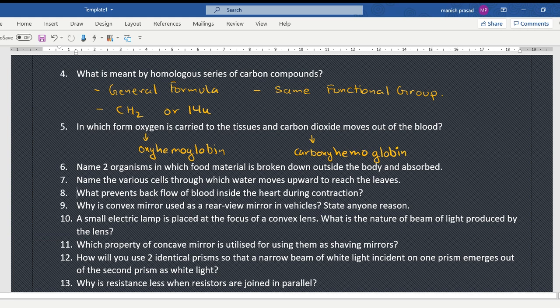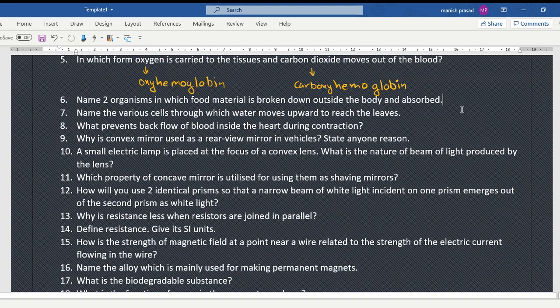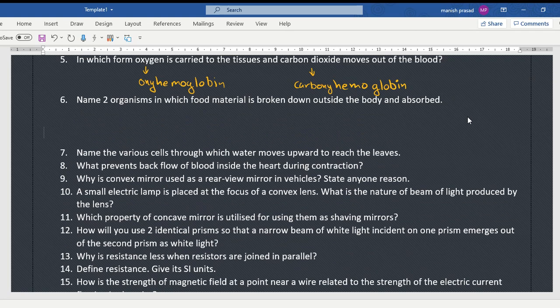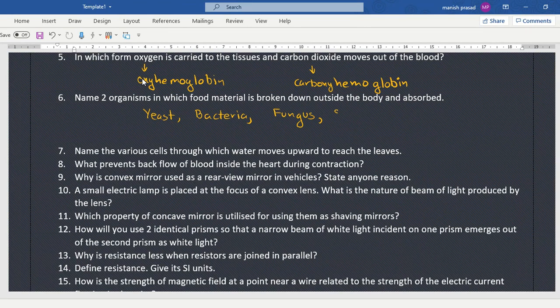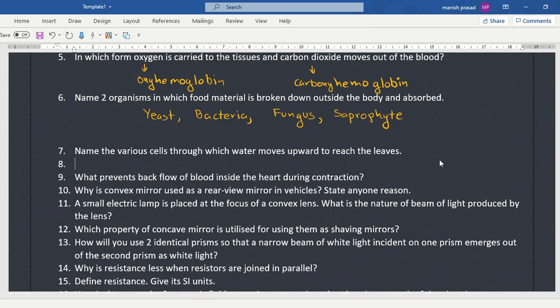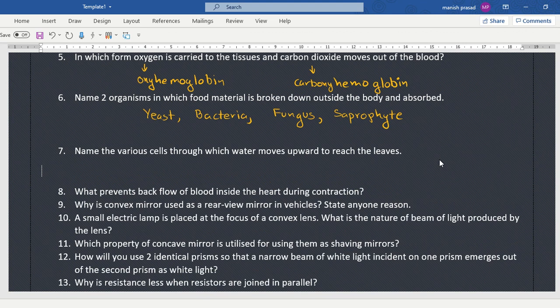Now name two organisms in which food material is broken down. Yeast, bacteria, fungus, will say fungus also. Okay. Somebody said the answer. Saprophytes is one of the answers. Yeah, fungus, saprophytes, yes. Saprophytes is one of the answer. Okay. Can we also write that rhizopus? Rhizopus is a saprophyte. Yes, we can. Fungus here. Okay, that is also correct.